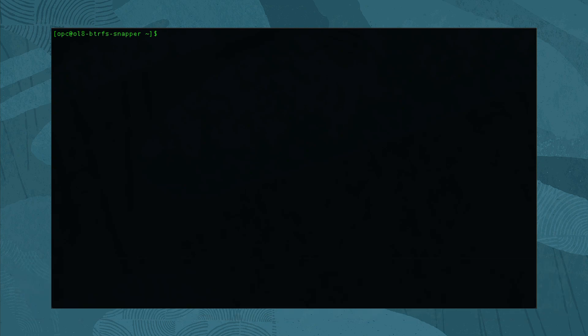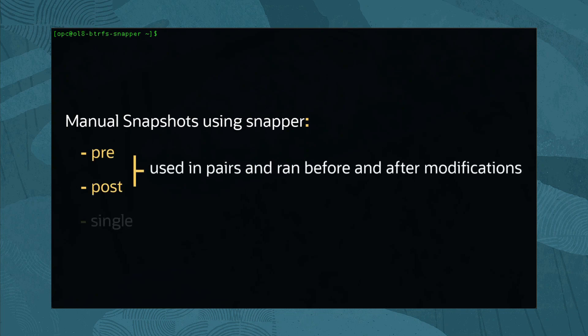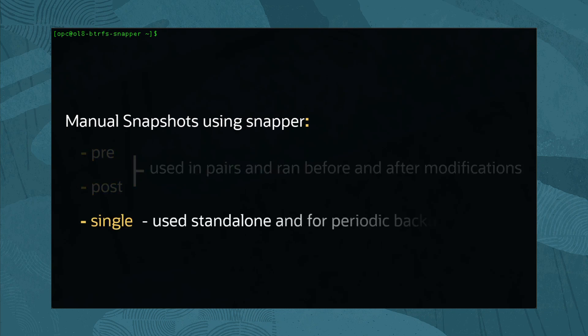Besides the automatic snapshots, snapper also allows manual snapshots. When using manual snapshots, the snapper utility can create three types of snapshots: the pre, the post, and the single. The pre and post should be done in pairs and run before and after modifications to a subvolume state. The single snapshot is also used to record a subvolume state but is not associated with any other snapshots. They are primarily helpful for periodic backup purposes.